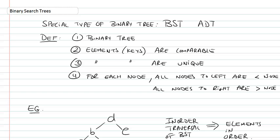In this video, we're going to be looking at a special type of binary tree called a binary search tree, or BST. It's also an abstract data type. We're going to examine the definition of a BST and other aspects relating to it.